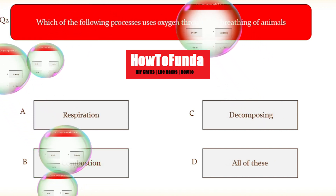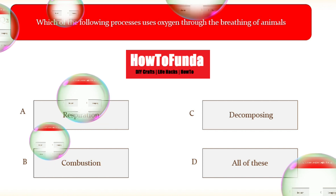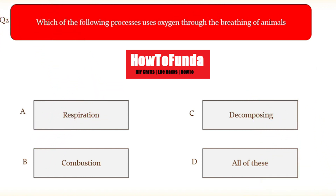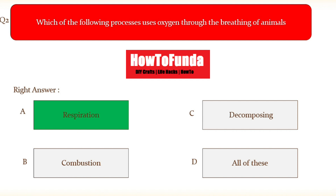The second question: which of the following processes uses oxygen through the breathing of animals? Option A respiration, option B photosynthesis, option C decomposing, option D all of these. The correct answer is respiration — respiration is the process which uses oxygen through the breathing of animals.